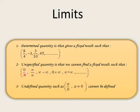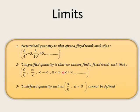Number two: unspecified quantity. What is the meaning of unspecified quantity? For example, 0 over 0. Zero over zero is not equal to zero. Zero over zero is an unspecified quantity because zero times any number equals zero. So zero times 1 is zero, zero times 2 is zero, zero times 3 is zero. Then what number times zero equals zero? It is unspecified — no fixed result, can't find a fixed result.